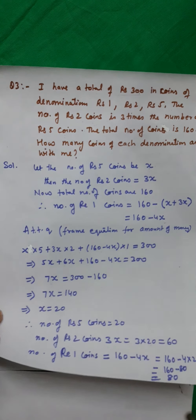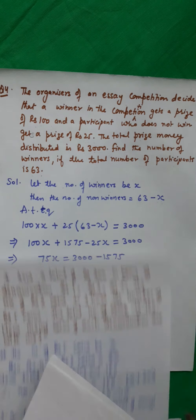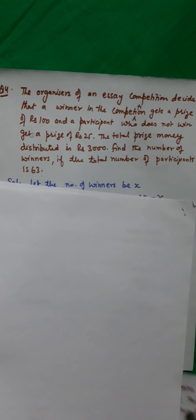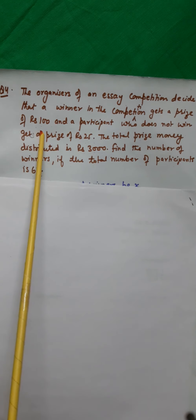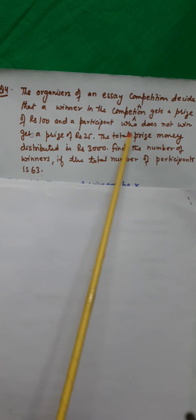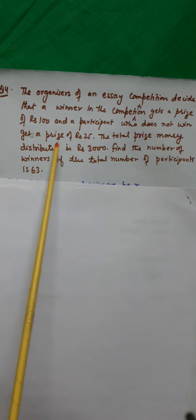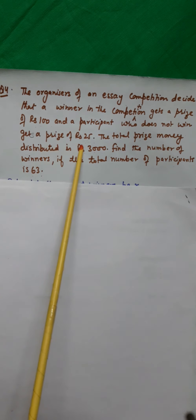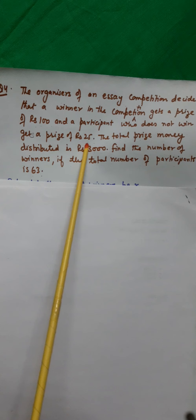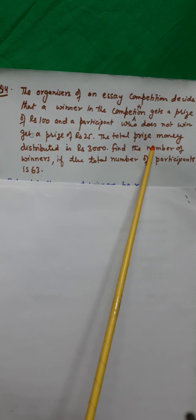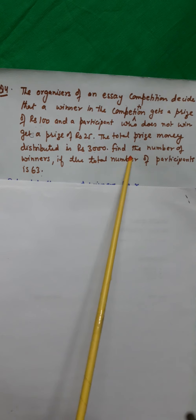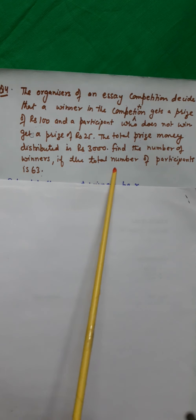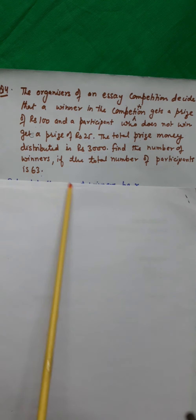Next question. The organizers of an essay competition decide that a winner in the competition gets a prize of rupees 100, and a participant who does not win gets a prize of rupees 25. The total prize money distributed is rupees 3,000. Find the number of winners if the total number of participants is 63.